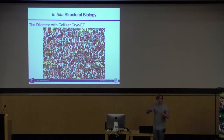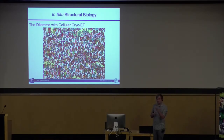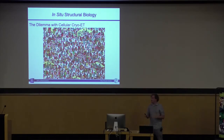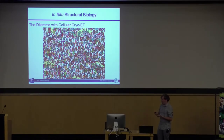If you ever looked at good cell images, you know what I mean. This cell is essentially full with stuff. It's not like you pictured spaces of water with ribosomes floating through once in a while — this is completely packed. But there are certain things we need to do with cells so that we can actually image them with cryo-ET.